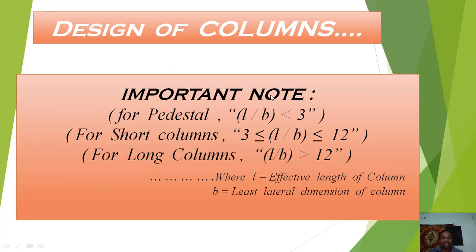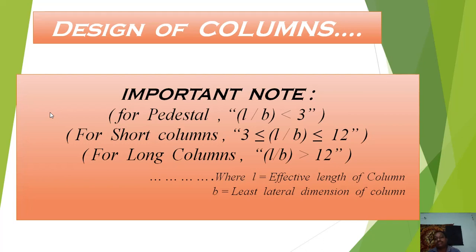There are three types of columns. One is the pedestal, another is the short column, and the third is the long column. For a pedestal, the L/B ratio is less than 3. For short columns, L/B is between 3 and 12 (3 ≤ L/B ≤ 12). For long columns, L/B is greater than 12.